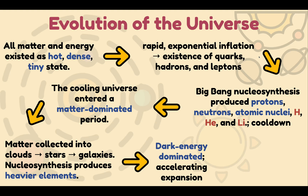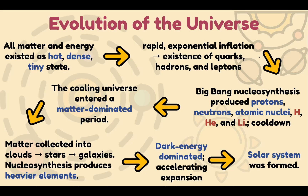From 9.8 billion years until the present, the universe became dark energy dominated and underwent accelerating expansion. At about 9.8 billion years after the Big Bang, the solar system formed. Previously, people thought gravity would eventually stop the expansion and end the universe with a big crunch, generating another bang — this would occur if the universe's density exceeds the critical density. If it is lower, there would be not enough gravitational force to stop expansion, and the universe would expand forever, leading to the big chill or big freeze. Recent observations of accelerating expansion suggest the universe will expand exponentially forever.